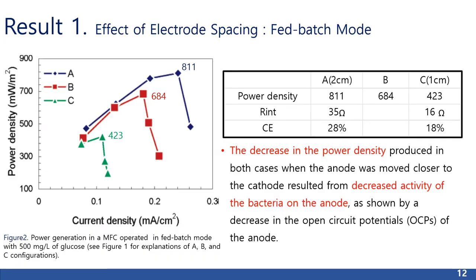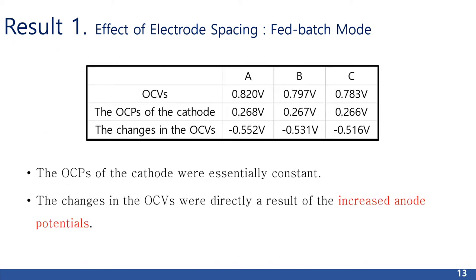Result 1 — Effect of electrode spacing, fed batch mode: when the electrode spacing was reduced from 2 to 1 cm, the maximum power density with glucose decreased from 811 to 684 mW per meter square. If the anode was placed 1 cm from the cathode and exposed to only one side of the fluid, the maximum power density further decreased to 423 mW per meter square. Power decreased under these conditions even though internal resistance decreased from 35 to 16 ohm. The coulombic efficiency decreased from 28 to 18 percent, and the decrease in power resulted from decreased activity of the bacteria on the anode, as shown by a decrease in the open circuit potentials of the anode.